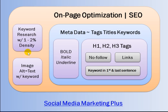Best practice is to have a minimum one to two percent keyword density in the blog post — meaning for every hundred words, your keyword shows up at least once or twice. You also want an image in every blog post with an alt tag containing your keyword. The metadata — tags, titles, and keywords — should have your target keyword bolded, italicized, and underlined, and you need H1, H2, and H3 tags for your target keyword phrase.